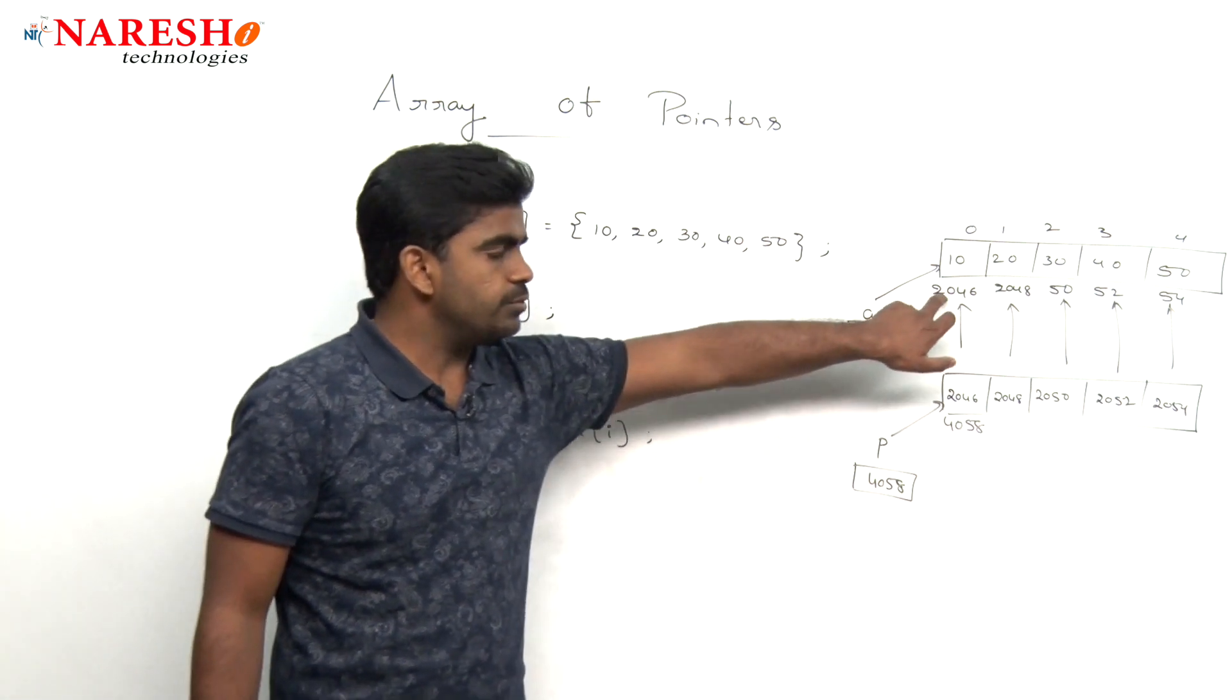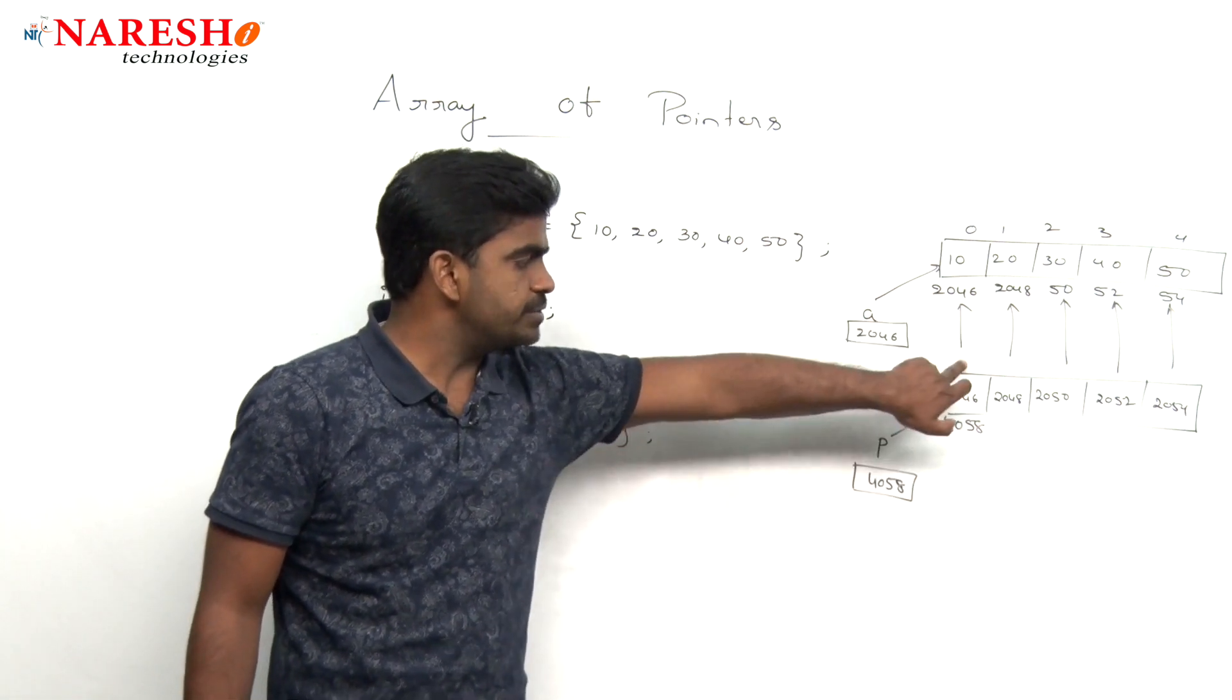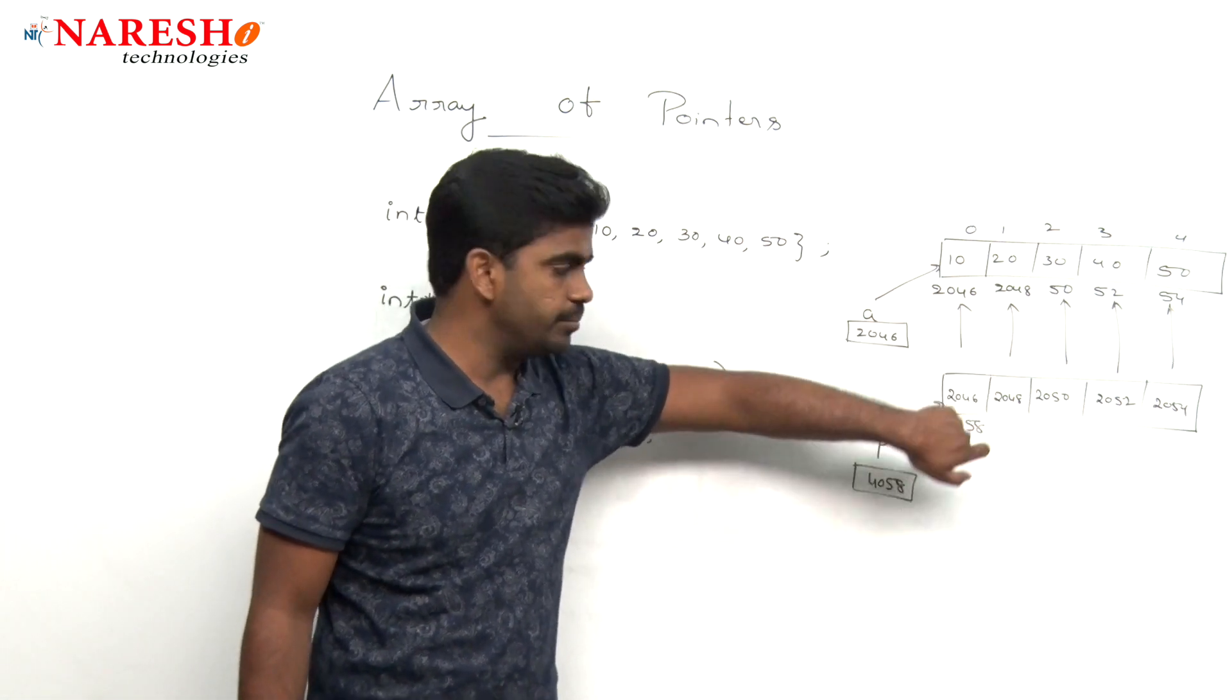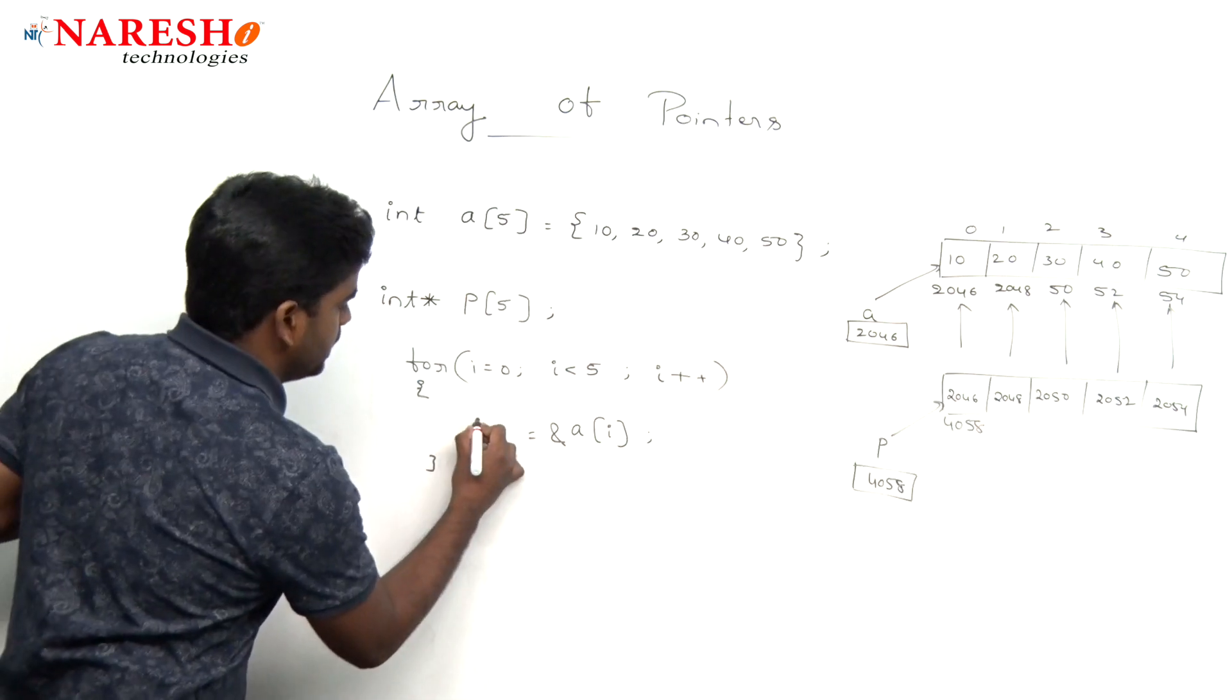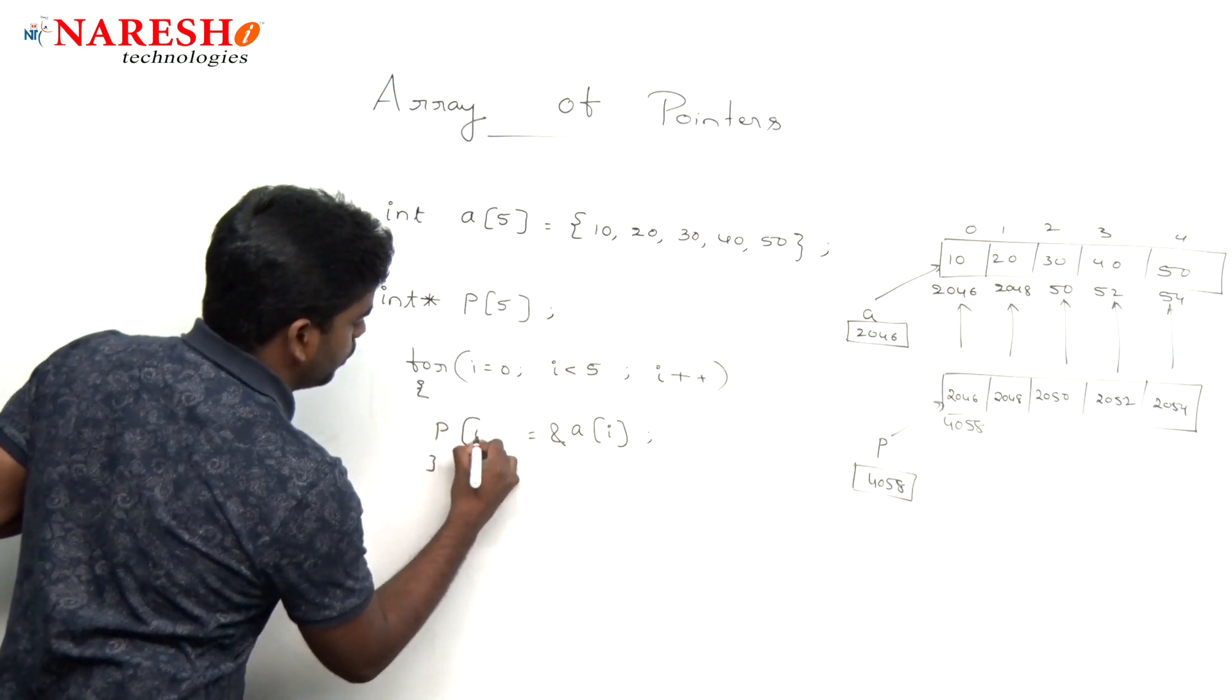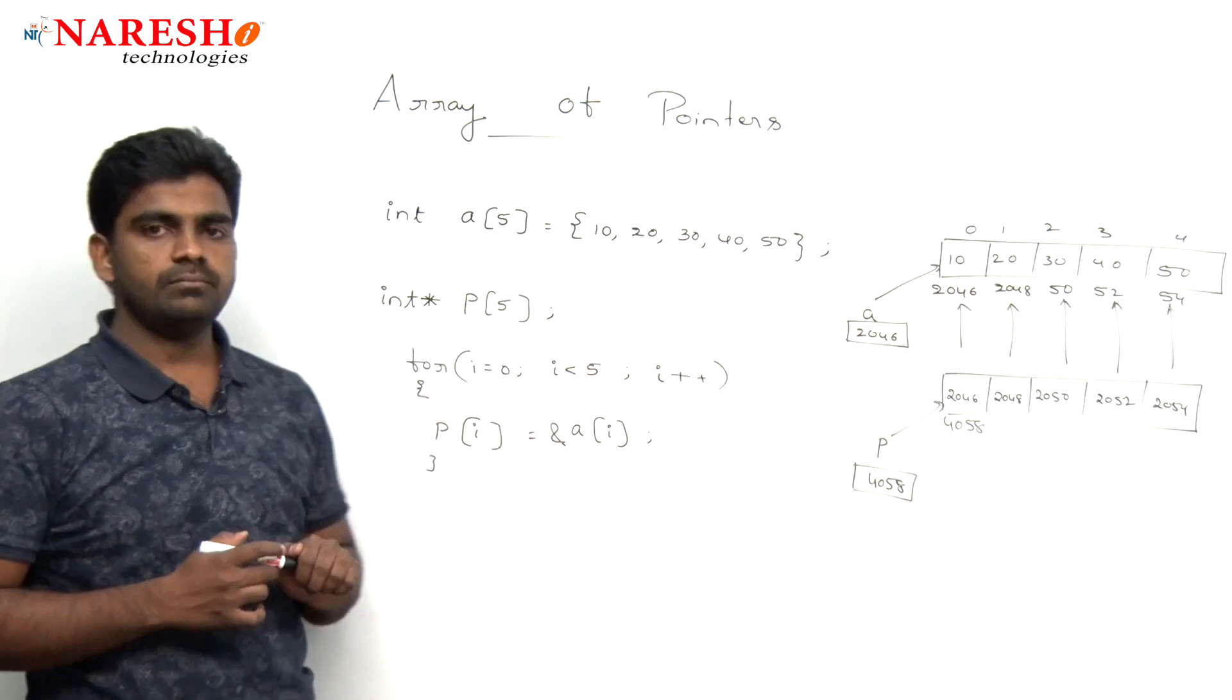So, that address 2046 will be stored into p of 0, p of 1, p of 2 like this. It is nothing but it will be stored into p of i.